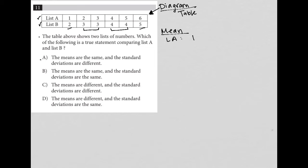Well, to find the mean, I'd have to add up all of the values in the list and then divide by the number of values that I have. When I add up the numerators, I have 1 plus 2 is 3, plus 3 is 6, plus 4 is 10, plus 5 is 15, plus 6 is 21. So I end up with 21 over 6.